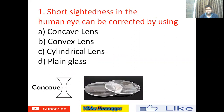First question: Short-sightedness in the human eye can be corrected by using — option A: concave lens, option B: convex lens, option C: cylindrical lens, option D: plain glass. So what is short-sightedness?